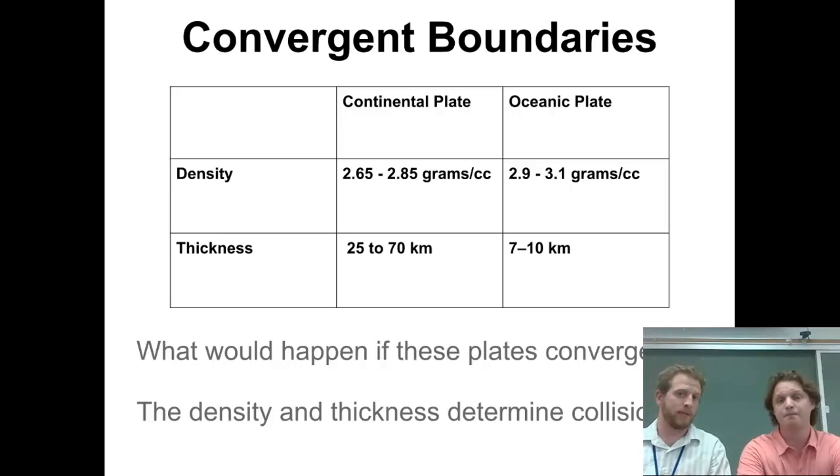The first type is a continental plate with a lower density - 2.65 to 2.85 grams per cubic centimeter. It's less dense than the oceanic plate. That makes sense because continents are on top of oceans.